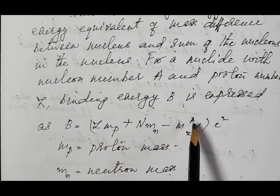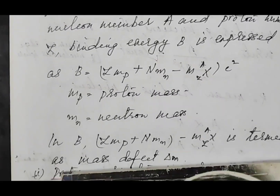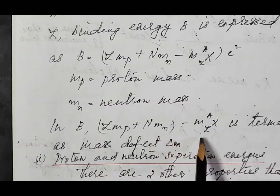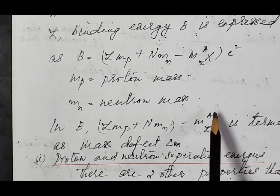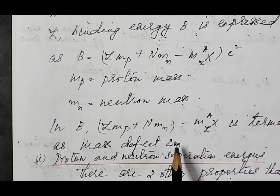Using this equation, we can calculate the binding energy. The quantity Z·M_P plus N·M_N minus the mass of nucleus X(A,Z) is termed the mass defect, denoted by delta M. So delta M times C squared is the binding energy.